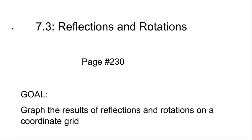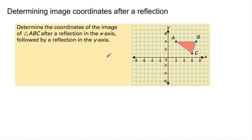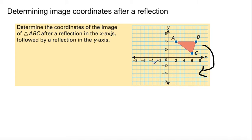Alright, the question is: determine the coordinates of the image of triangle ABC after reflection in the x-axis, followed by reflection in the y-axis. So basically, you're going to flip this triangle over the x-axis, and then flip it again over the y-axis.